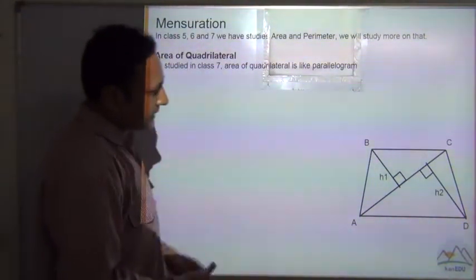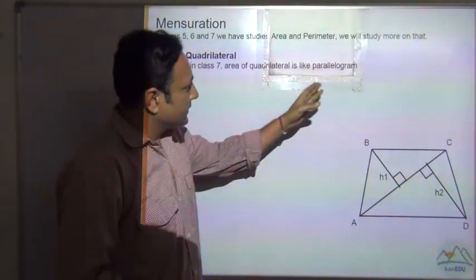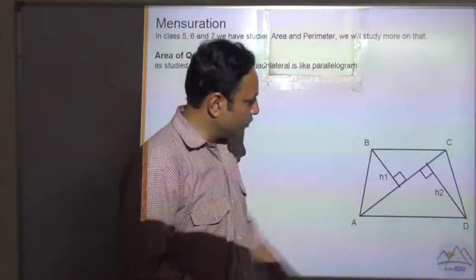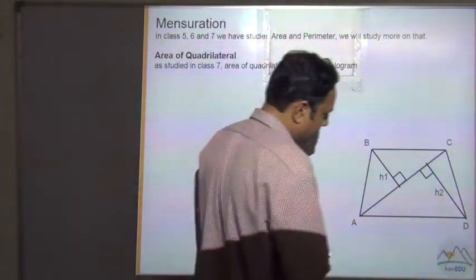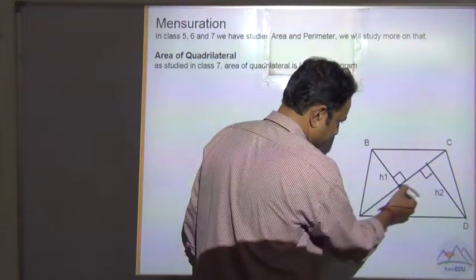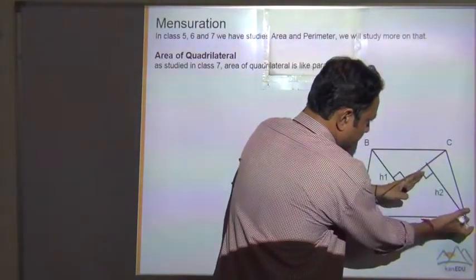Okay, so we can say that a quadrilateral is made up of two triangles. If we make a diagonal, see AC is a diagonal, so we can see there are two triangles formed.